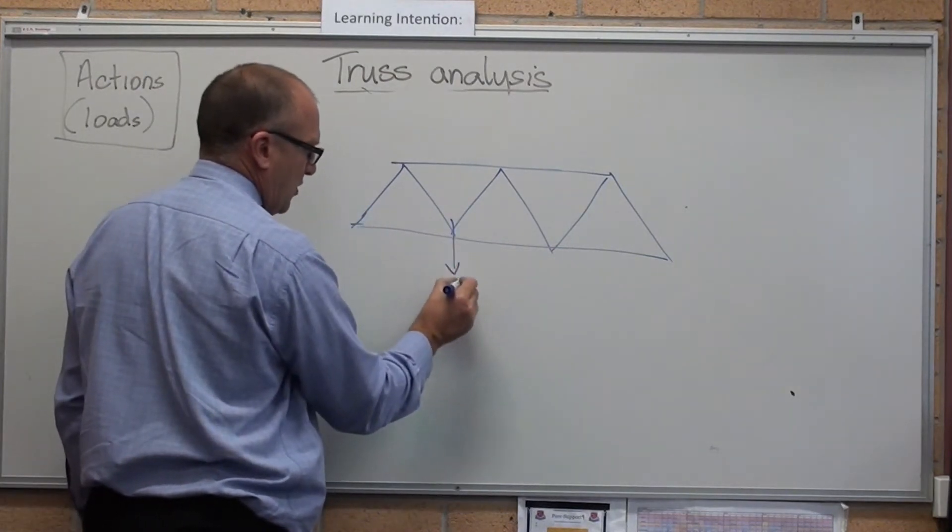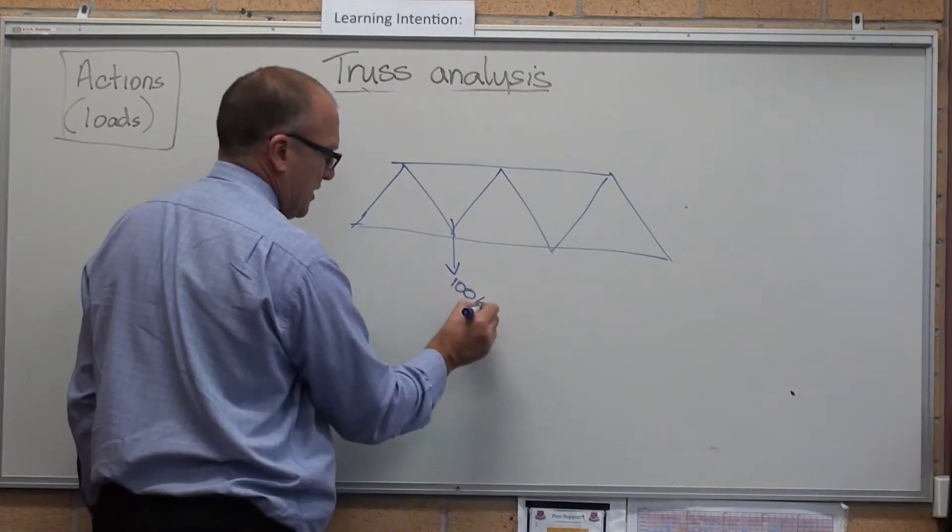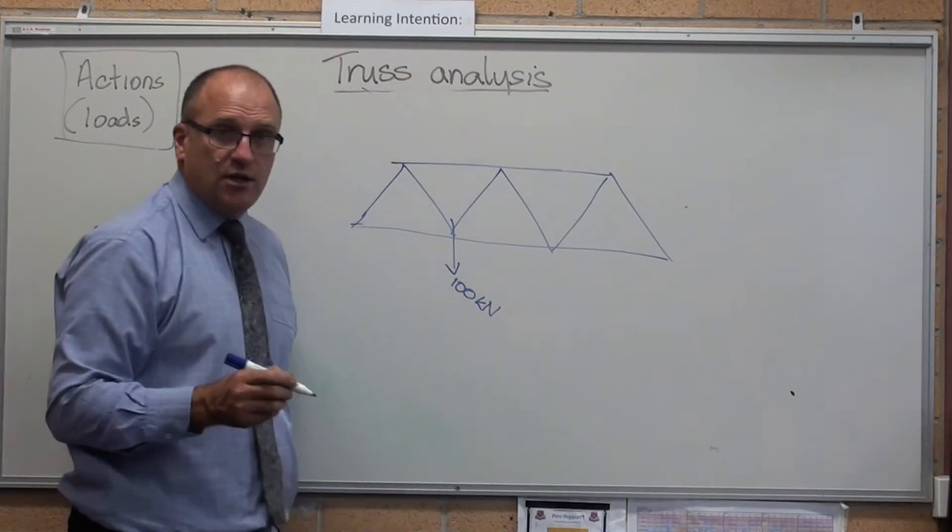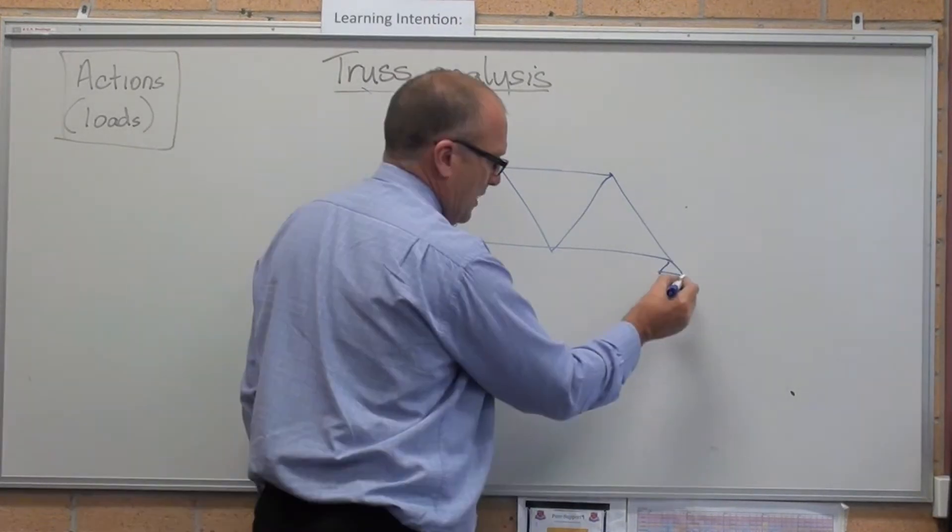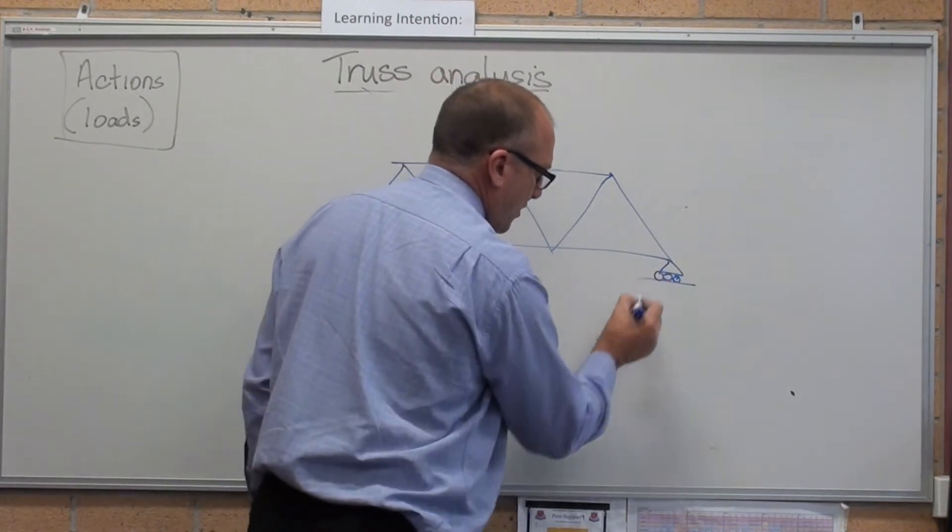Let's say here I've got 100 kilonewtons pushing down there. I'm only going to use this example in every single video. There is a light, there is the roller bearing, so it only has a vertical reaction.